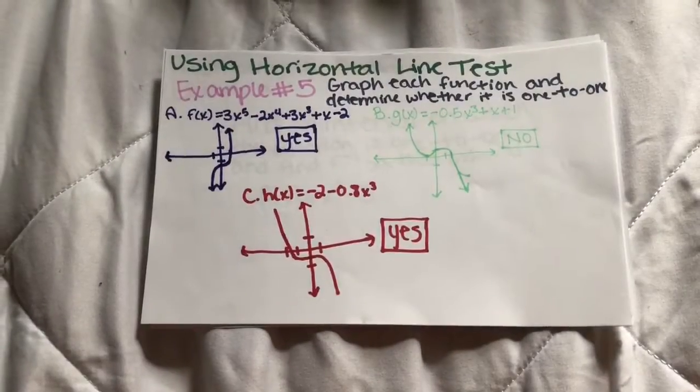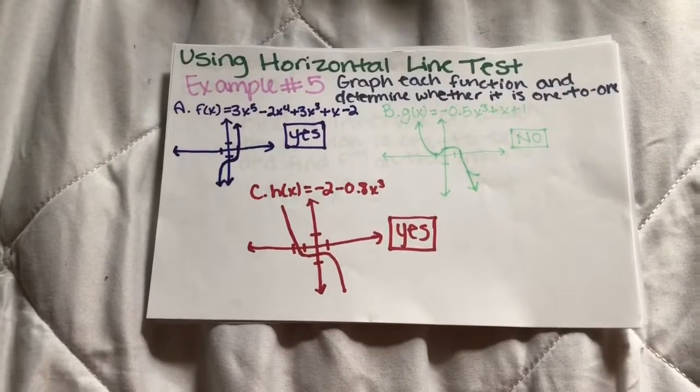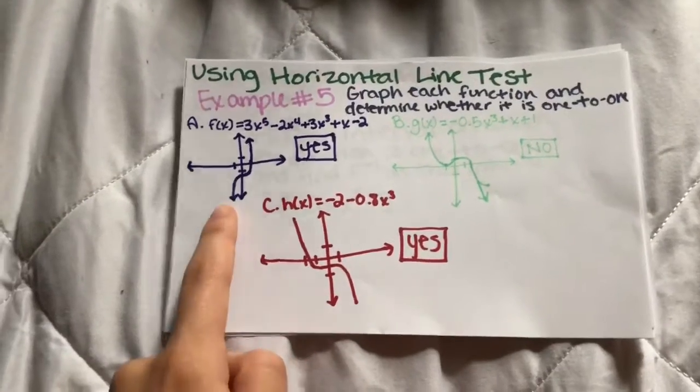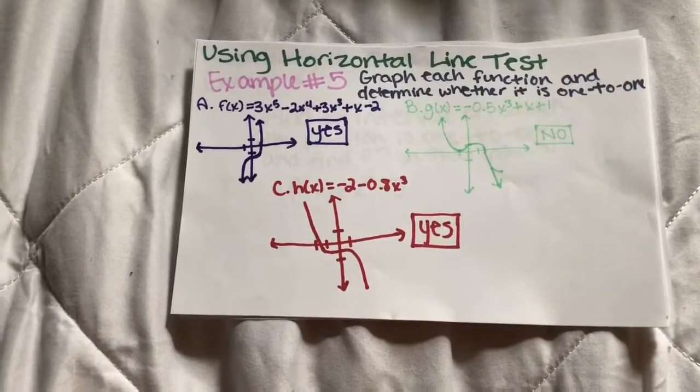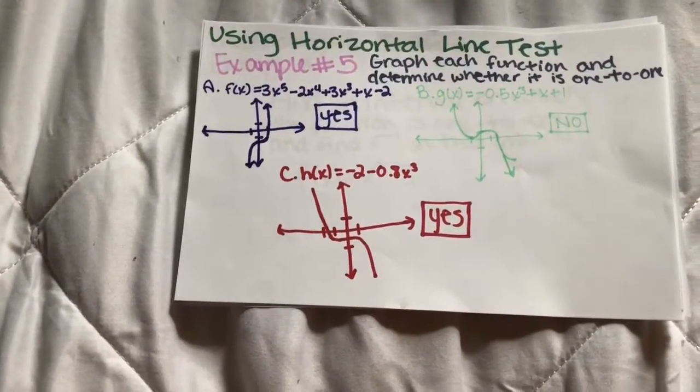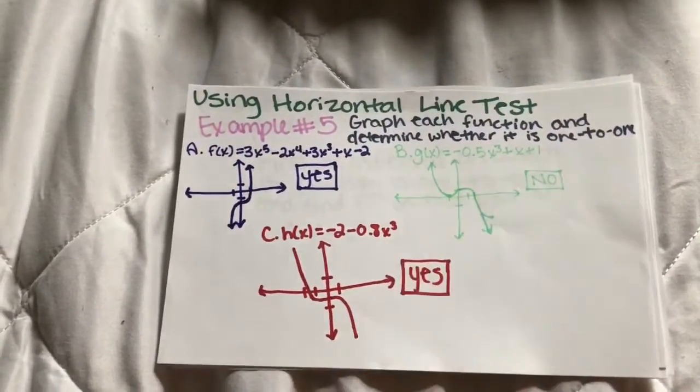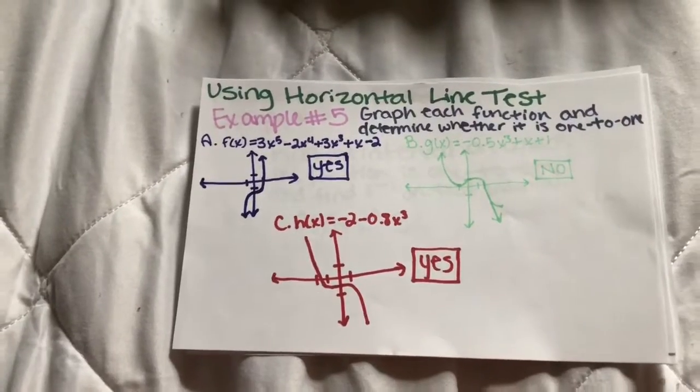Using the horizontal line test. Example 5. Graph each function and determine whether it's a one-to-one function. Letter A is a one-to-one function because it passes the vertical and horizontal line test. Letter B is not one because it is elongated right here. And C is also a one-to-one function.